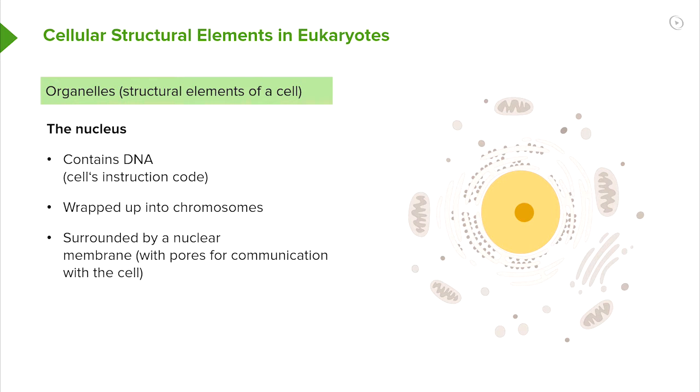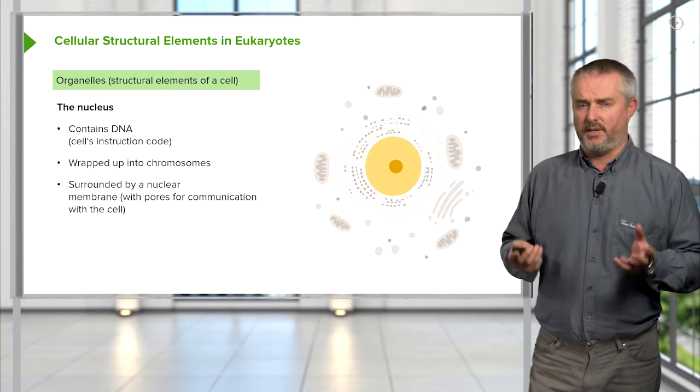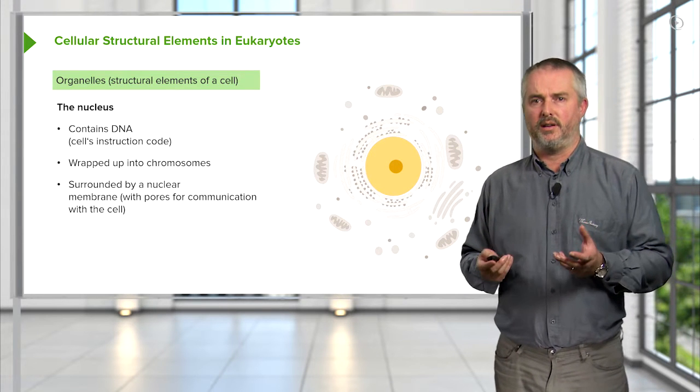But it's there as the code, the instruction code to run the cell, and it's in the form of chromosomes. The nuclear membrane surrounds it, protects it, because it's the master copy, the single copy that the cell's got of that information, so it needs to look after it.